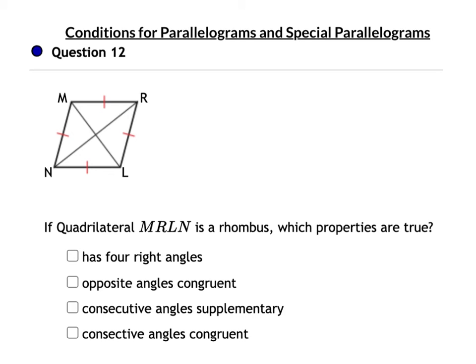In question 11, the quadrilateral is a rhombus. In a rhombus, opposite sides are congruent (all sides are congruent), the diagonals are perpendicular, and each diagonal bisects its angles. Does a rhombus have four right angles? Only if it's a square — so not necessarily. Opposite angles are congruent — true in any parallelogram, and a rhombus is a parallelogram. Consecutive angles are supplementary — true in any parallelogram. Consecutive angles congruent? No — consecutive angles are supplementary, not congruent, in a rhombus.